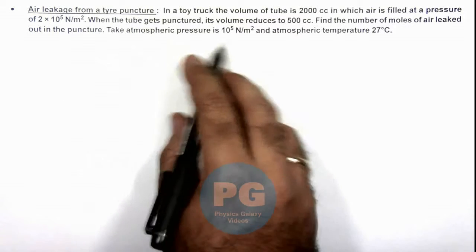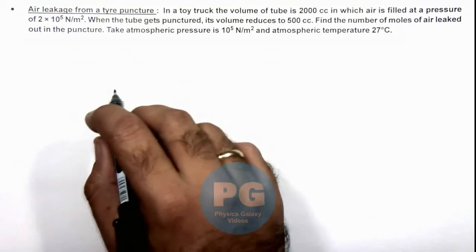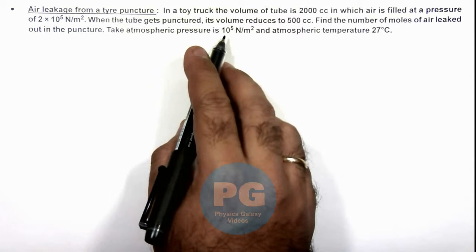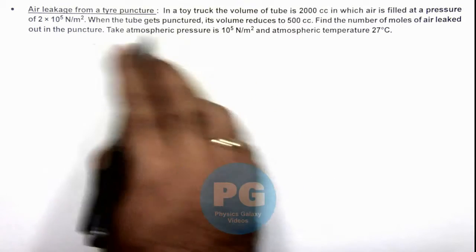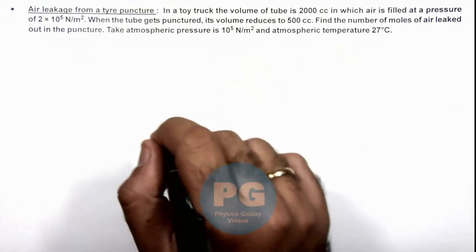And atmospheric pressure is given as this value, which is the final pressure of air when the tube gets punctured. And atmospheric temperature is also given.